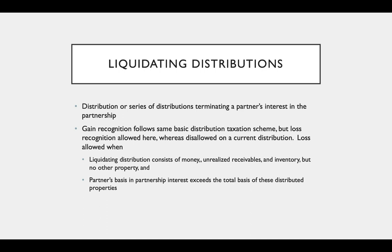A loss is going to be allowed when the liquidating distribution consists of money, unrealized receivables, and inventory but no other property, and the partner's basis in the partnership exceeds the total basis of these distributed properties. So to recognize a loss, your liquidating distribution must only consist of money, unrealized receivables, and inventory.